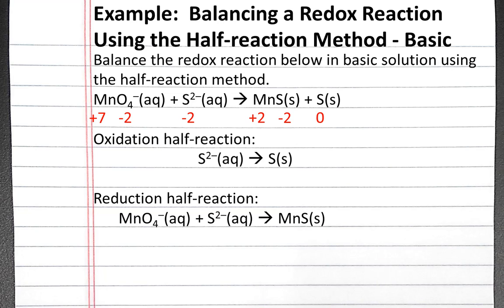First, we'll balance the oxidation half-reaction. Since mass is already balanced, we only have to focus on charge. To balance charge, we'll add 2 electrons to the right so that the total overall charge on the left is minus 2 and the total overall charge on the right is minus 2.